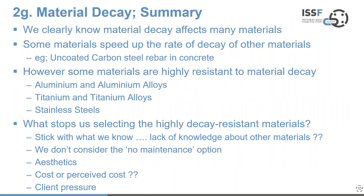Summarising material decay: it affects many materials, and some materials speed up the rate of decay of others — such as uncoated carbon steel rebar in concrete. But some materials are highly resistant to decay: aluminium and its alloys, titanium and its alloys, and stainless steels. What stops us selecting these highly decay-resistant materials? Is it sticking with what we know, lack of knowledge, perceived cost, client pressure, or simply not considering no-maintenance as an option?